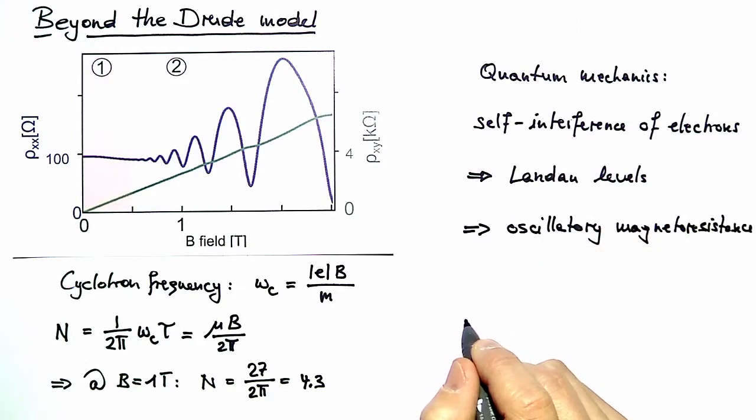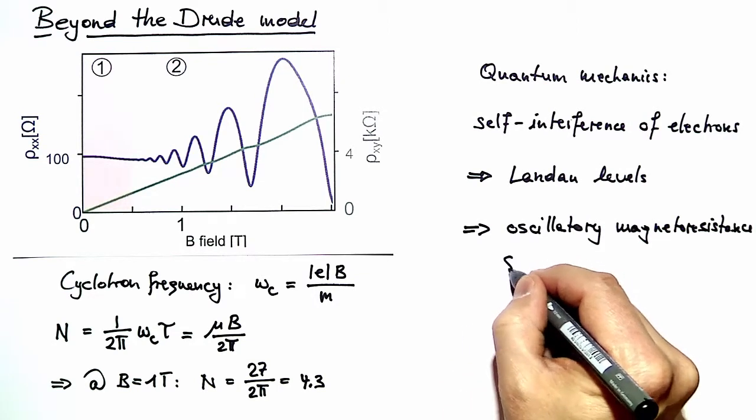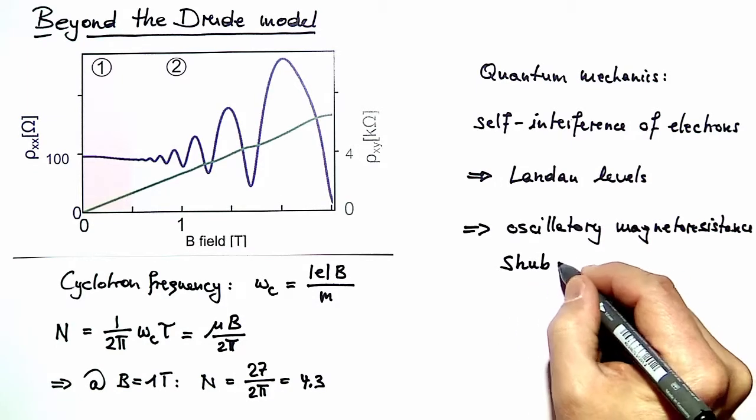I would like to mention at this point that this oscillatory magnetoresistance phenomenon is known under the name of Shubnikov-de Haas oscillations.